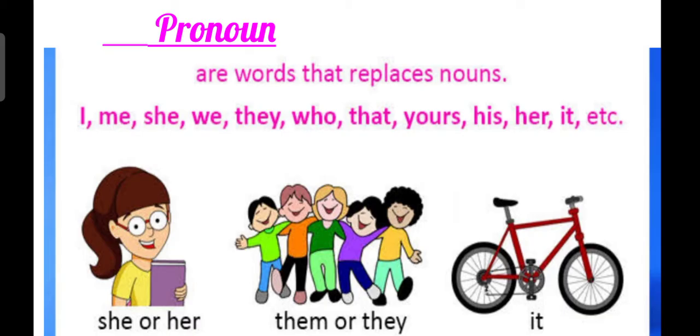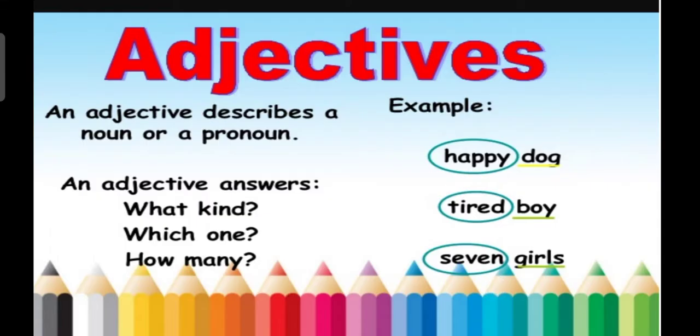So I think now all of you have understood about noun and pronoun. So an adjective describes a noun or a pronoun in a sentence. That means adjectives describe करते हैं, बताते हैं noun और pronoun के बारे में जो sentence में use हुए हैं। Example: happy dog. Dog is a noun. Dog कैसा है? Happy है। Tired boy. Boy कैसा हो गया है? Tired हो गया है। Seven girls. कितनी girls? Seven girls.